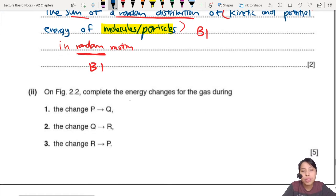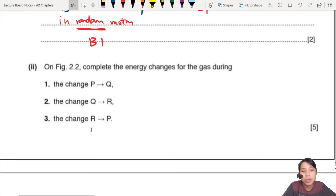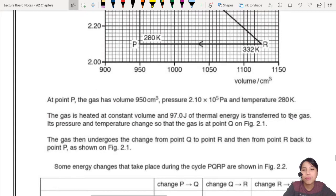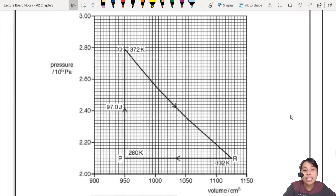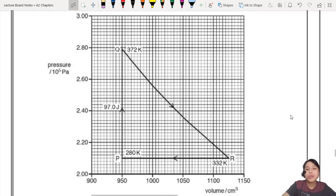Okay, we're going to skip part one. We'll go to part two first. On the figure, complete the energy changes for gas during all these stages of the cycle. Five marks! Oh my goodness. This is going to be fun. So you have this diagram of the gas cycle. You start off at P, you go to Q, go to R and come back at P.